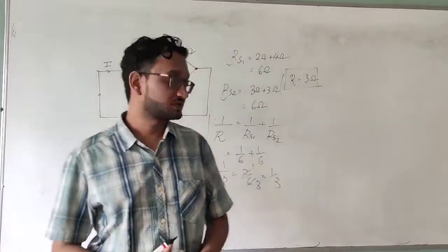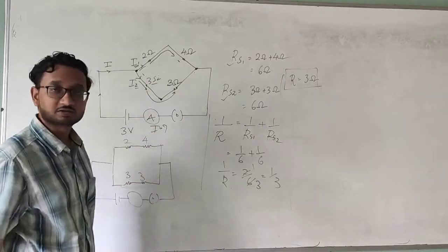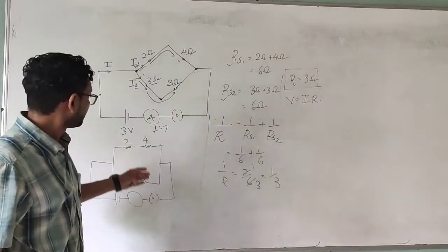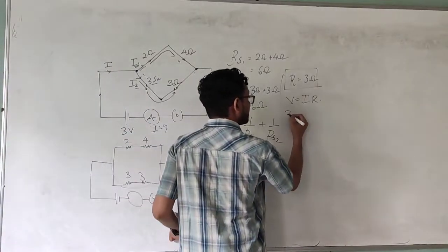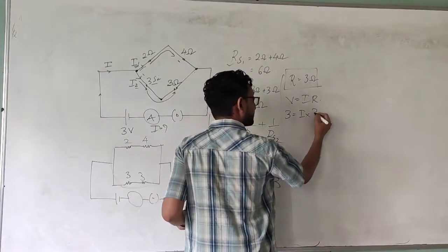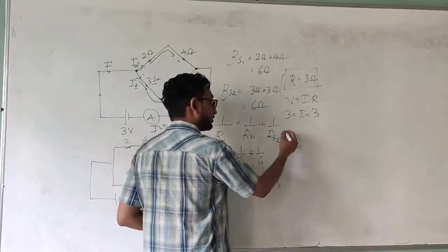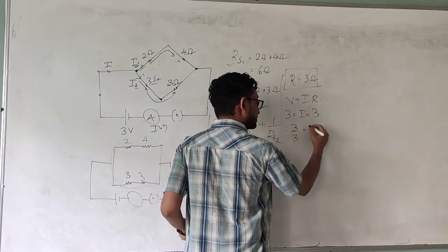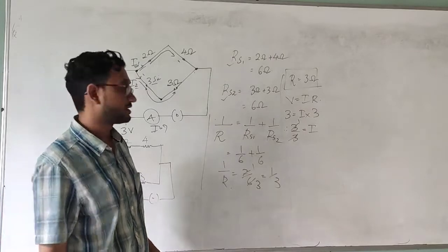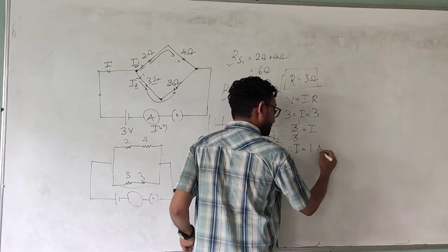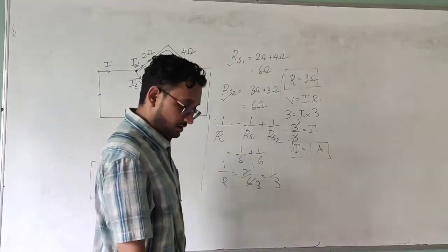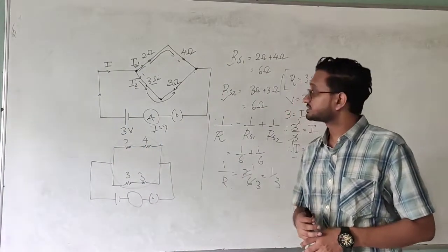Now that we have the total resistance of three ohms, we have all the values needed to find the current. Using Ohm's Law, V equals I times R. Voltage V is three volts and resistance R is three ohms. So I equals three divided by three, which gives I equals one ampere. This is how you find the current flowing in the circuit. I hope this numerical was easy to understand.